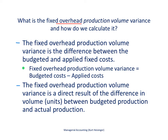Now we will look at the fixed overhead production volume variance. The fixed overhead production volume variance is the difference between the budgeted fixed overhead costs and the applied fixed overhead costs — I use the terms fixed overhead and fixed manufacturing overhead interchangeably. Most companies apply fixed overhead to products based on some method, such as direct labor hours, machine hours, or an activity-based costing system. The variance is simply the difference between what was budgeted for fixed overhead costs and what was applied to products, as shown in the formula.